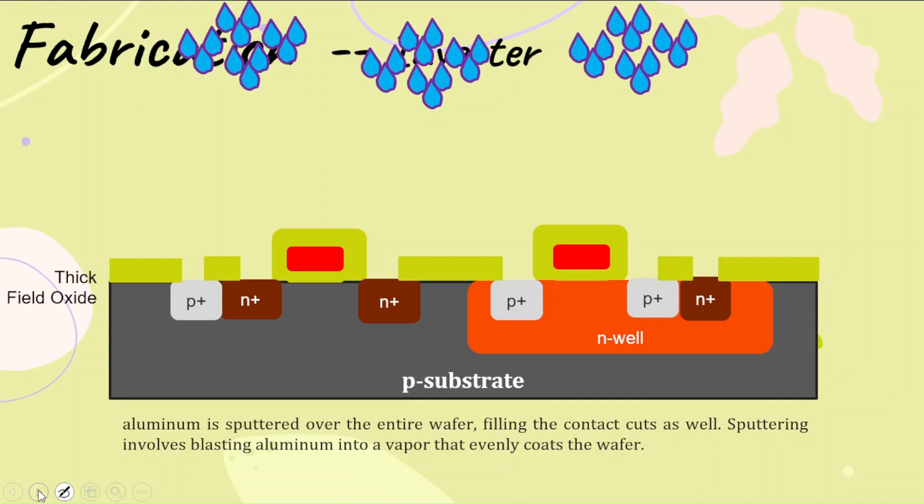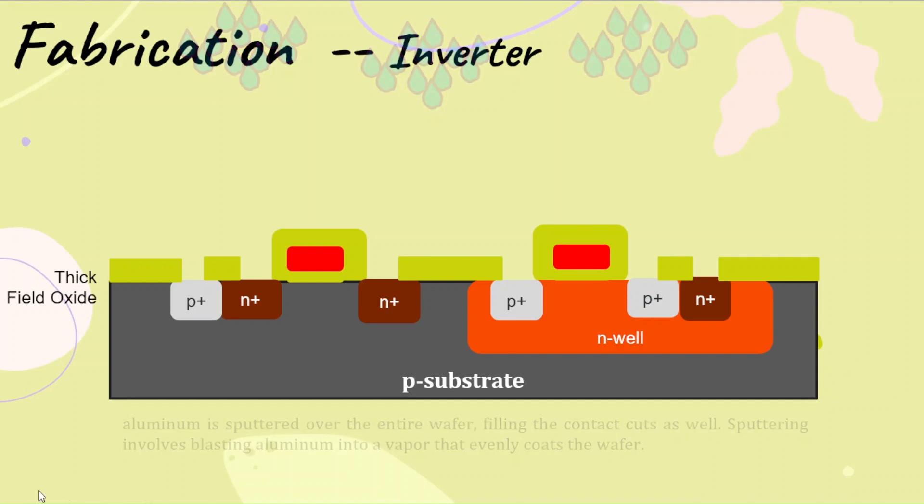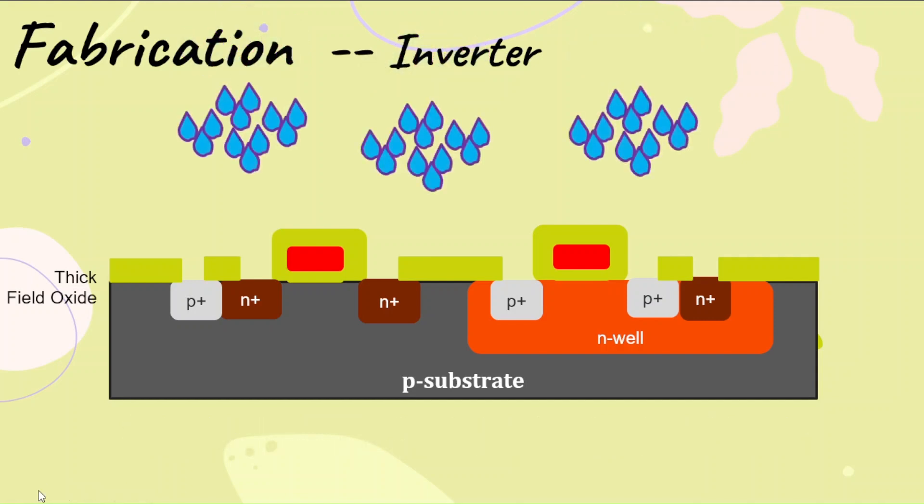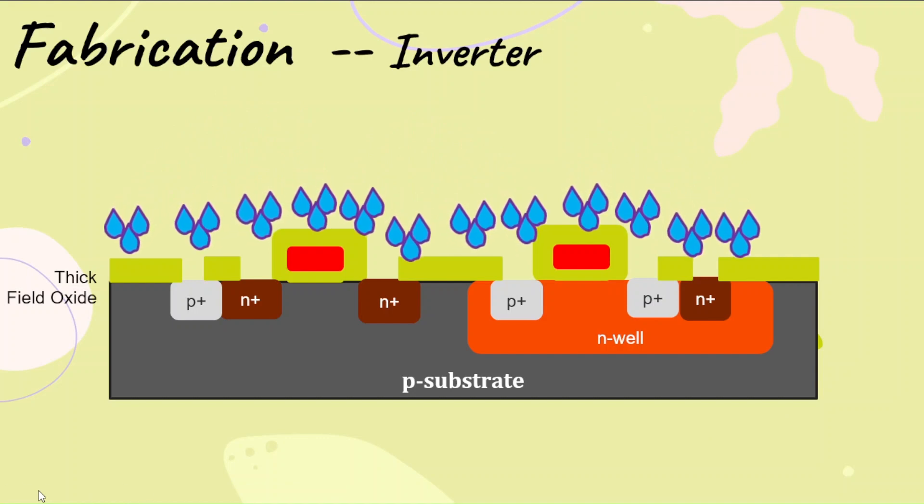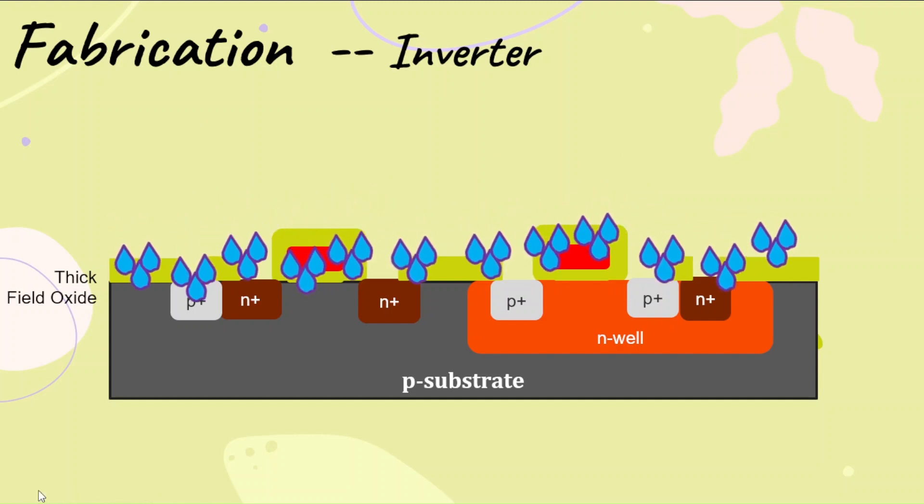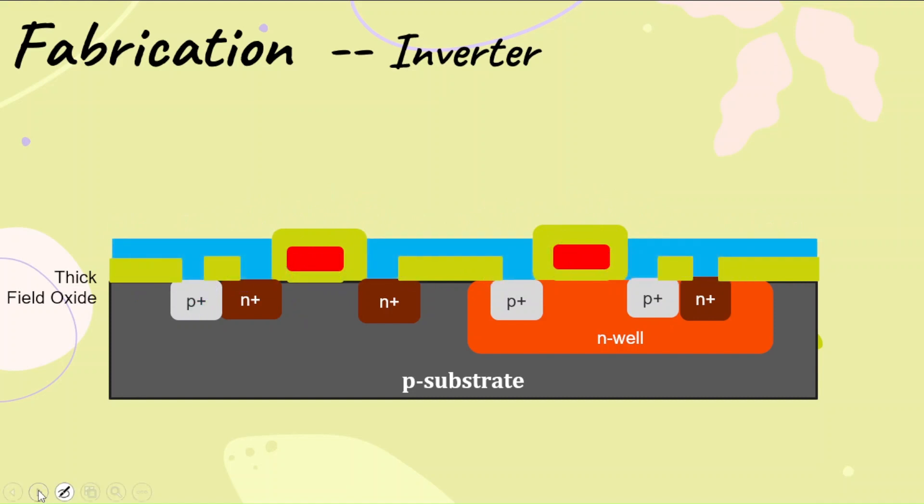This is metallization. In this metallization, aluminum is sputtered all over. The metal is heated to the highest temperature and is sputtered all over the surface. You get a thick layer of metal formed. Wherever you don't require it, it is again etched through proper etching process.